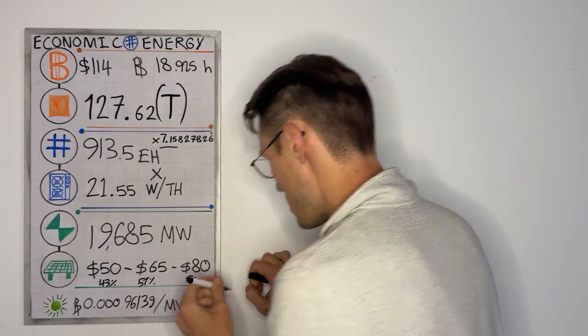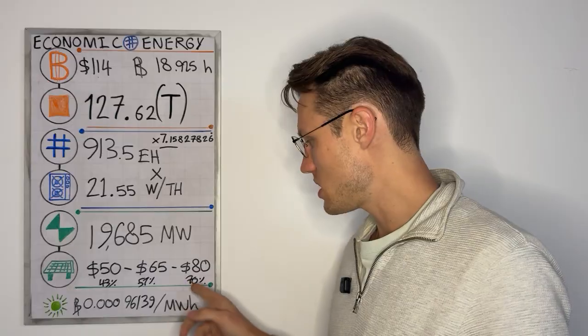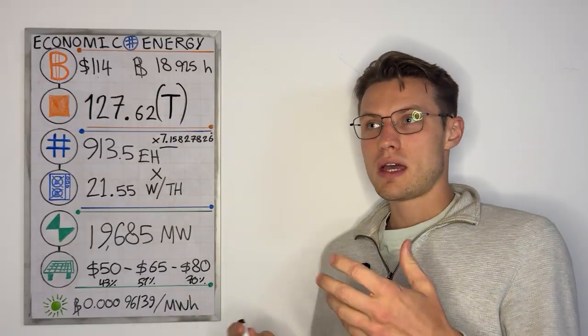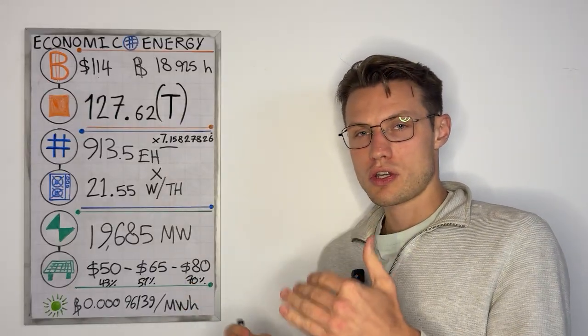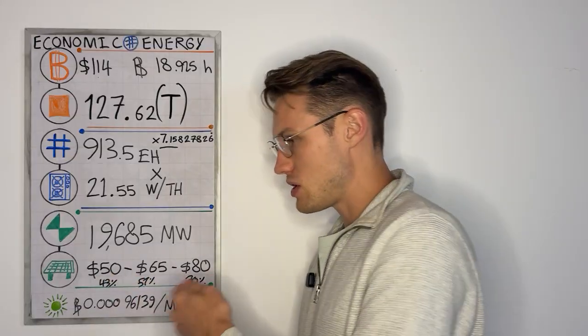So those are production floor percentages. So 119 multiplied by this, this and this, and you get a gauge of the sort of production costs of different prices of energy cost.